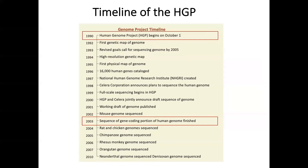This slide shows the history and timeline for a number of genomic projects. Even after the human genome was declared completed in 2003, scientists kept producing more precise genomic sequence information. Later versions of genomic sequences are usually more accurate.